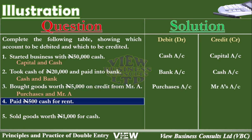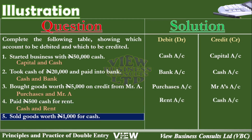The fourth transaction is that he paid 500 naira cash for rent. The two accounts here are the cash account and the rent account — we debit the rent account and credit the cash account. The last transaction is that he sold goods worth 1,000 naira for cash. The two accounts involved are the sales account and the cash account. When we sell we receive cash, so we debit the cash account and credit the sales account.